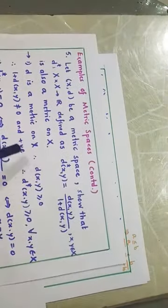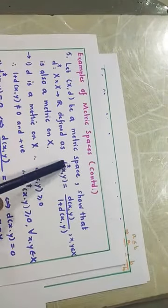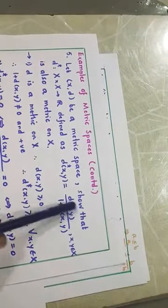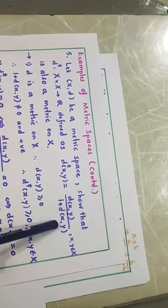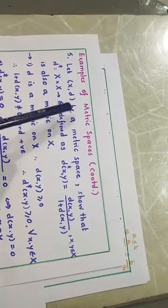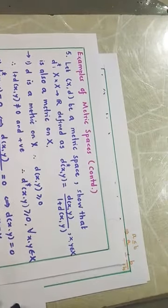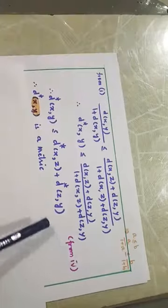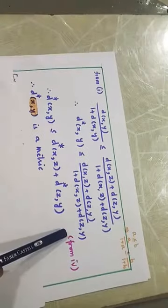Therefore D* is a metric. So D* = D/(1+D) is a metric when (X, D) is a metric space. This is one important example.